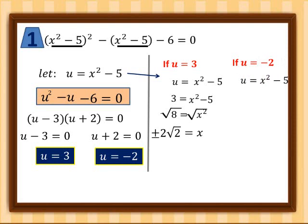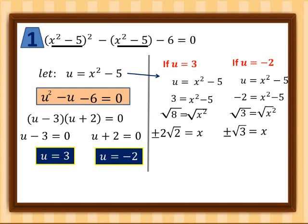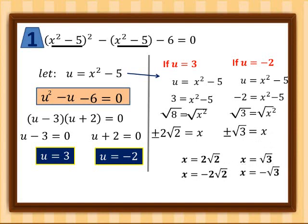Next, if u equals negative two, we substitute back into u = x² - 5, giving us negative two equals x² - 5. Transposing the negative five, we get x² equals three. Since we cannot extract the square root of three as an integer, we leave it as positive and negative square root of three. So we now have four values of x: positive and negative two square root of two, and positive and negative square root of three.